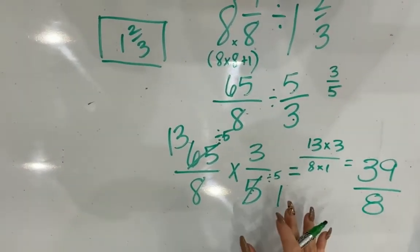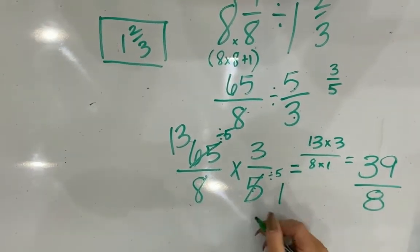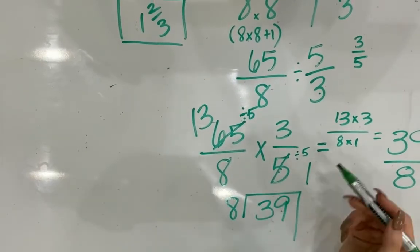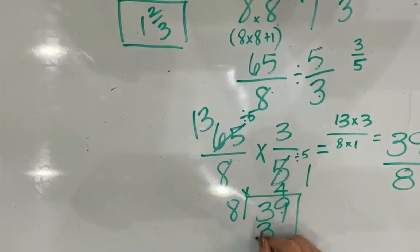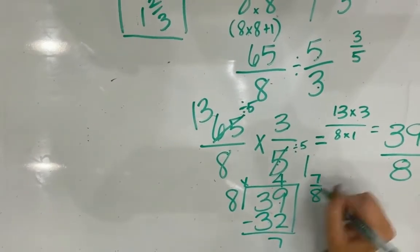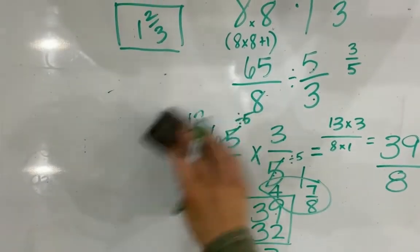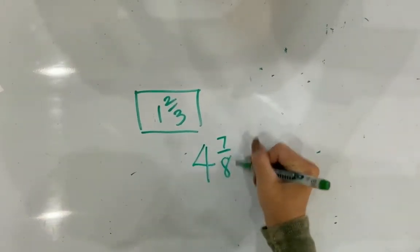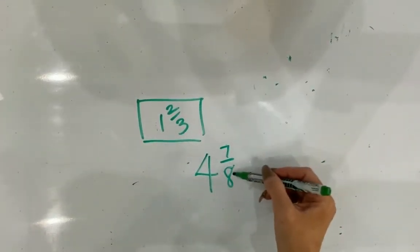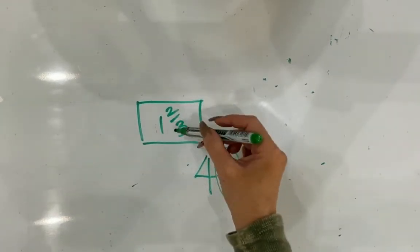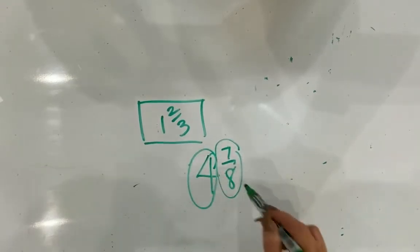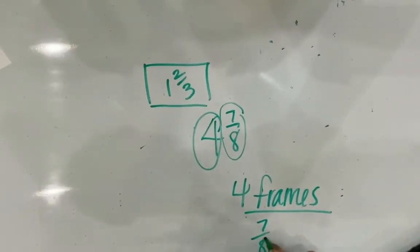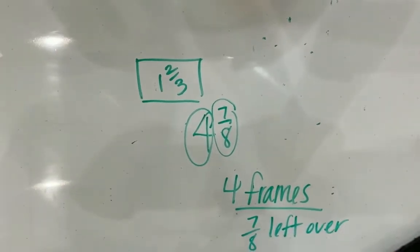I need to turn the improper fraction 39 over 8 into a mixed number. 39 divided by 8 is 4, since 4 times 8 is 32, with 7 left over — so that's 4 and seven-eighths. But I can't make a partial frame, so I can only make 4 frames at most, with seven-eighths of a board's length left over.